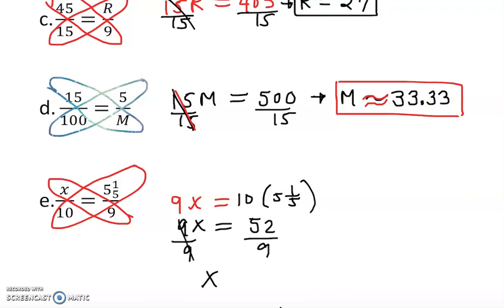X equal to exactly 5 and 7 over 9. If you are not sure how to convert improper to mixed, I have a video in the basic math section. This is exact, or approximately you want to use approximation sign 5.78.